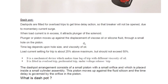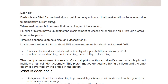Dashpots are fitted for overload trips to get time delay action due to momentary current surges. There is a momentary current surge, so the dashpot introduces a delay so that the breaker should not be opened. If there is a sudden surge in current, the breaker will suddenly open, causing a blackout and all machinery will shut down.